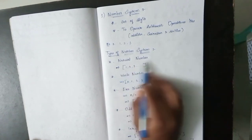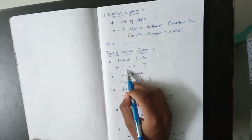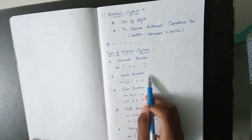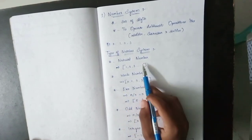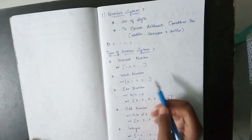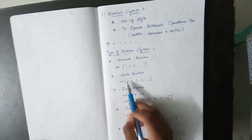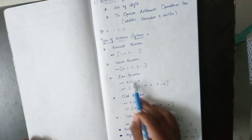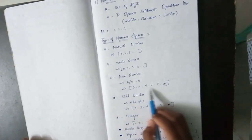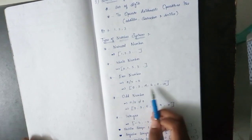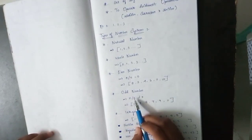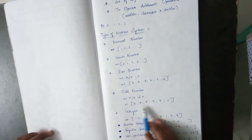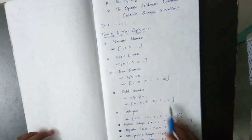What types of number system are there? First, natural numbers — natural numbers start from 1. Whole numbers start from 0. Even numbers are 2, 4, 6, 8, 10. Odd numbers are 1, 3, 5, 7, 9, 11.